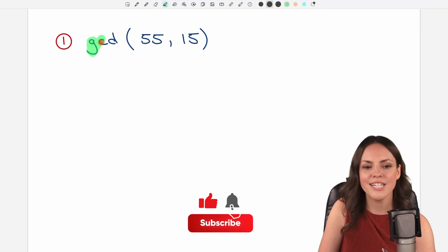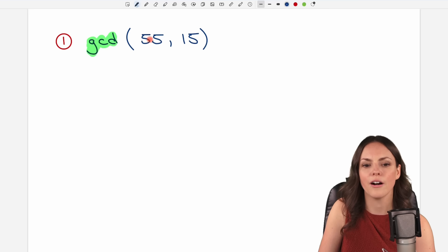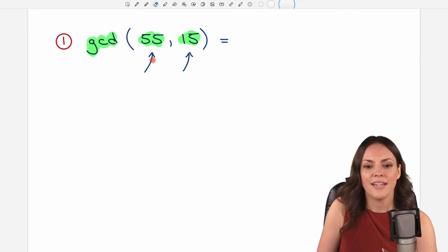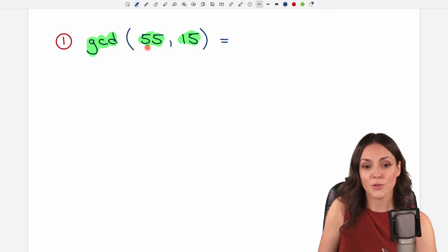We want to find the GCD or the greatest common divisor of 55 and 15. In general, the GCD is going to be a number that we have to find, and this number is a divisor of the 55 and a divisor of the 15, and it is the greatest of all the divisors of these two numbers. And the Euclidean algorithm helps us to find the greatest common divisor.